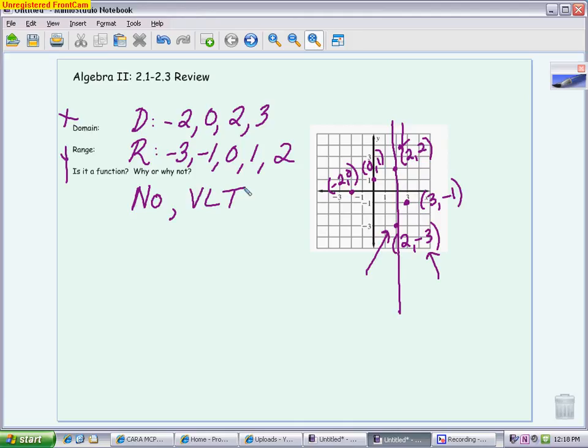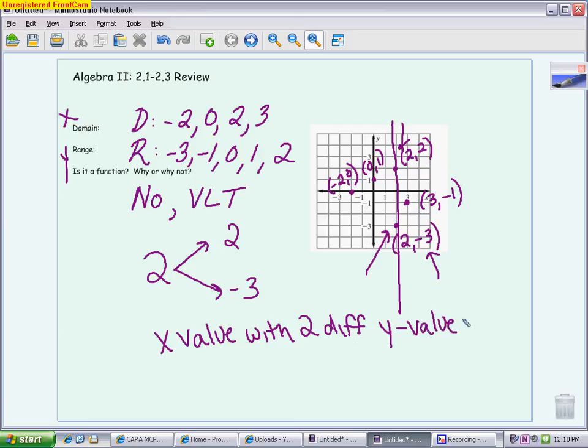The other option is you could kind of make me a little chart that says, you know, two goes with two different values. Two goes with two, but it also goes with negative three. So we have an x value with two different y values. So there's a lot of ways to explain it. The visual way is looking at that vertical line, but you can also make like a little chart with arrows saying, oh, here's my x value, but it has two different partner y values, or you could write it in words. Any of those would be acceptable, and it's just what you're more comfortable with.